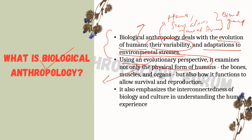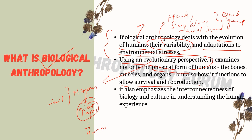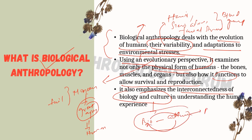Biological anthropology studies these phenomena using an evolutionary perspective. Over the course of evolution, humans might have adopted certain features which are very beneficial and left off features that are not — for example, monkeys have tails, but over the course of evolution from monkeys to great apes, this feature is no longer evident in humans. It also examines not only the physical form — bones, muscles, and organs — but how they function to allow survival and reproduction.